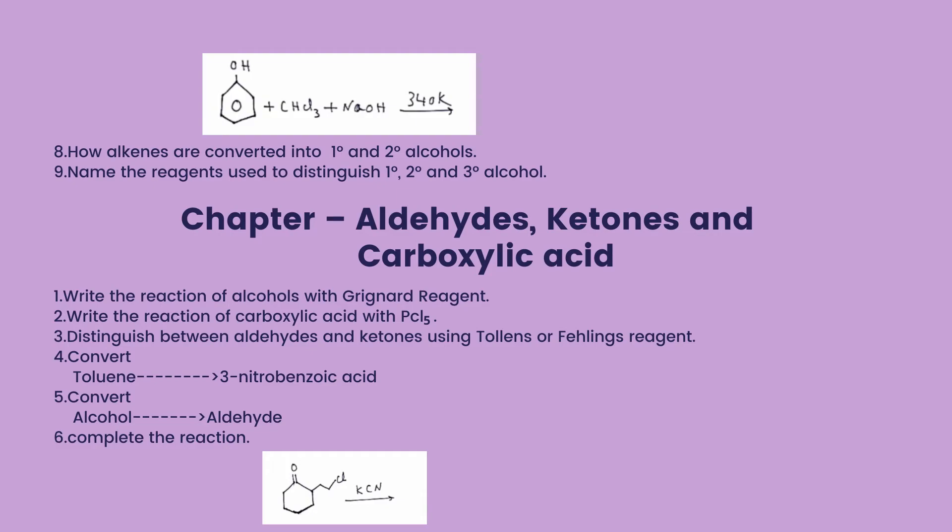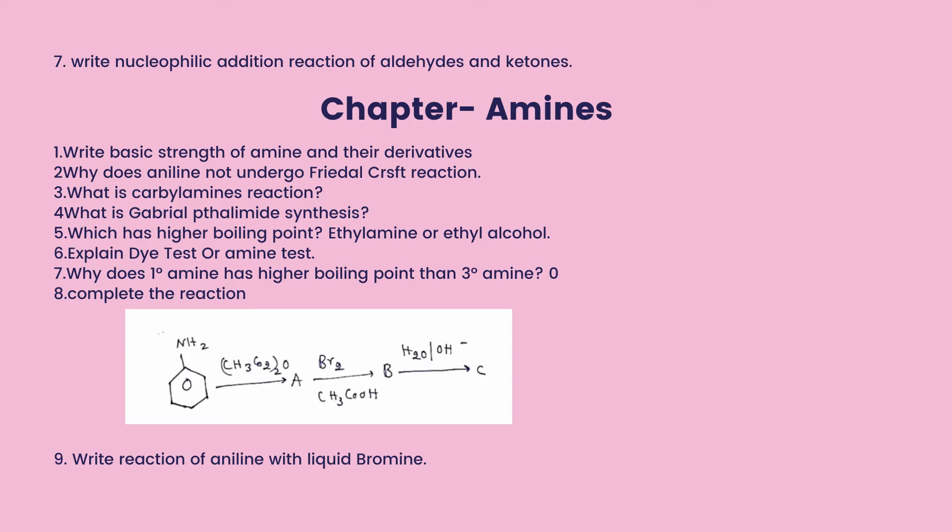Chapter: Aldehydes, Ketones, and Carboxylic Acids. Write the reaction of alcohol with the Grignard reagent. Write the reaction of carboxylic acid with PCl₅. Distinguish between aldehyde and ketones using Tollens' or Fehling's reagent. Convert toluene to 3-nitrobenzoic acid. Convert alcohol into aldehyde. Complete the following reactions. Write the nucleophilic addition reaction of aldehydes and ketones.